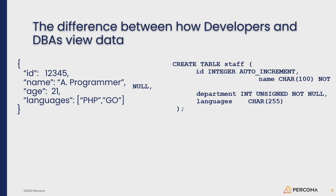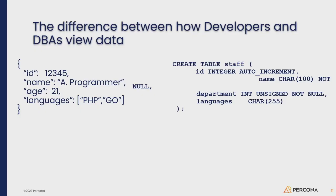You can have strings, numerics, and arrays. The arrays can be numerics, strings, or a mix — it's all very loosey-goosey. And then on the right, you have a table definition, which is the way DBAs normally see data, where you have an ID field and the characteristics of that field — in this case a CHAR(100) NOT NULL.